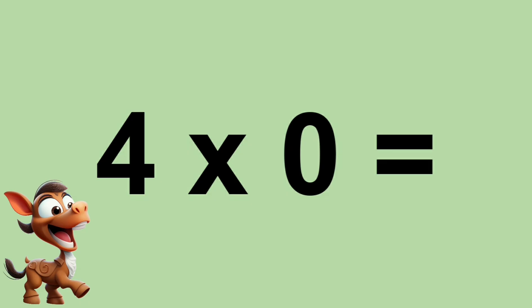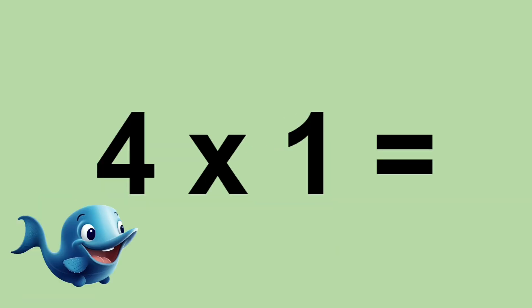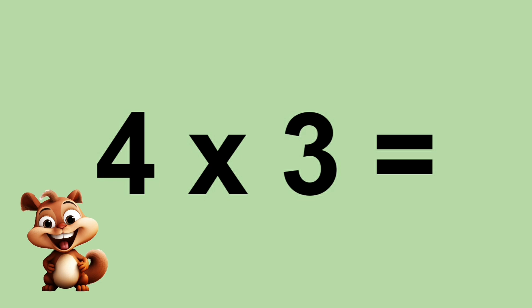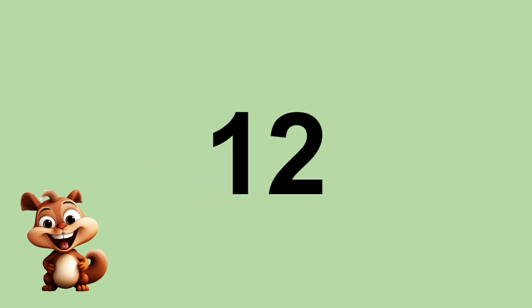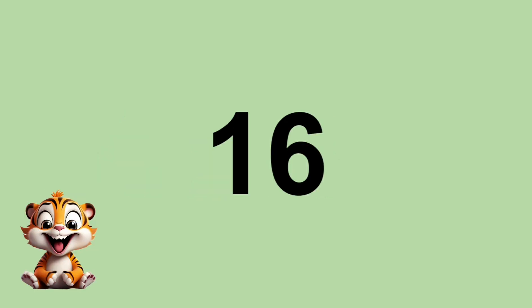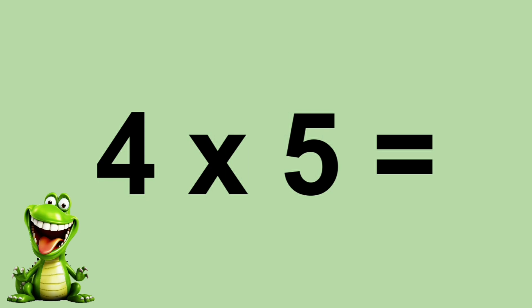Four times zero equals zero. Four times one equals four. Four times two equals eight. Four times three equals twelve. Four times four equals sixteen. Four times five equals twenty.